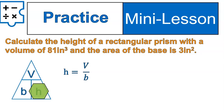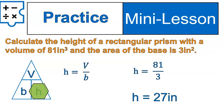Here is our formula all set up. The height is volume divided by the base area, so it's 81 divided by 3, which leaves us with 27. Because it's height, it's just going to be 27 inches, not square inches or cubic inches.